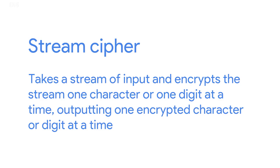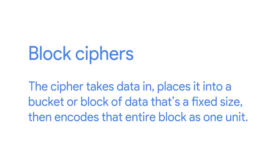There are two more categories that symmetric key ciphers can be placed into: block ciphers or stream ciphers. A stream cipher takes a stream of input and encrypts it one character or digit at a time, outputting one encrypted character at a time — a one-to-one relationship. Block ciphers take data and place it into a fixed-size block, then encode that entire block as one unit. If the data isn't big enough to fill the block, the extra space is padded to ensure the plaintext fits evenly.